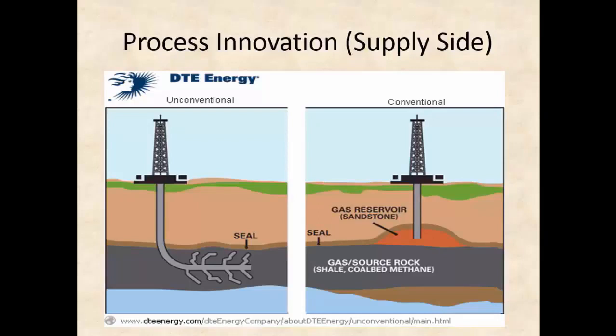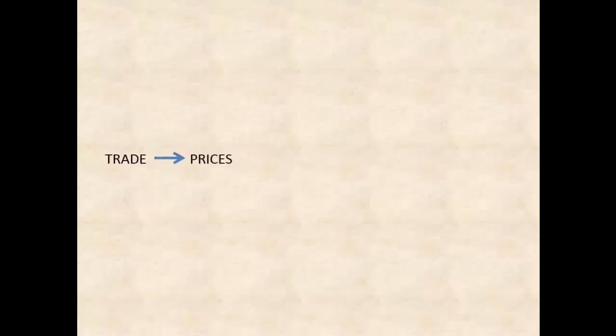No doubt the innovations will continue to be developed and efficiencies will be increased as oil companies continuously face a very competitive global environment. So we can have product innovation or process innovation—and that's a pretty durable result of a competitive market economy. Now we're going to put all of this together with a little schematic that encapsulates how the whole process works. Starting with trade, markets for all goods, and that means we have prices.